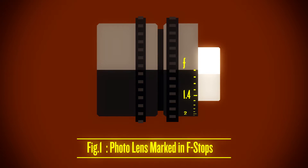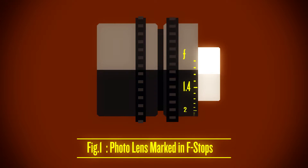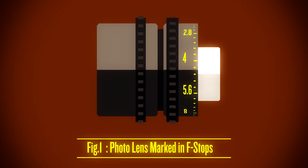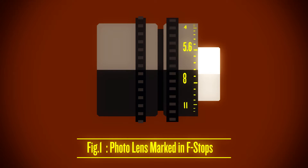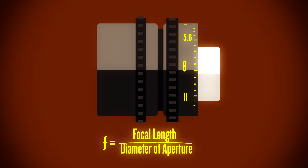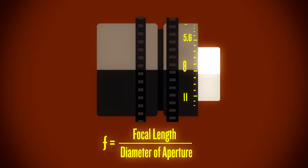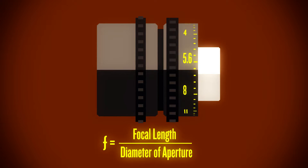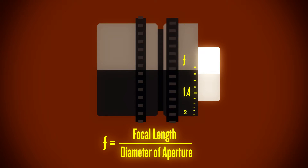Many modern cinematographers started off with photography lenses, typically marked with F-stops. F-stops are calculated measurements of the size of the aperture. This number is determined by dividing the focal length by the diameter of the aperture.